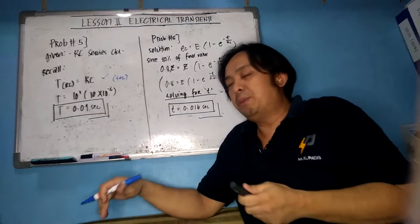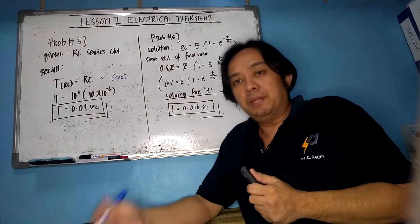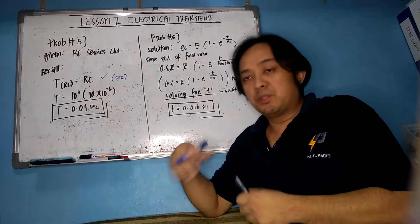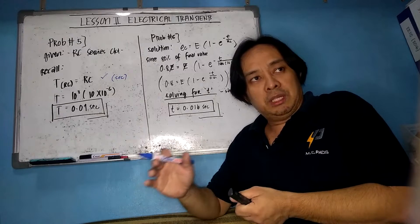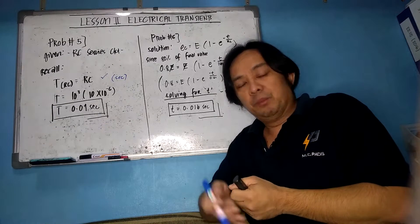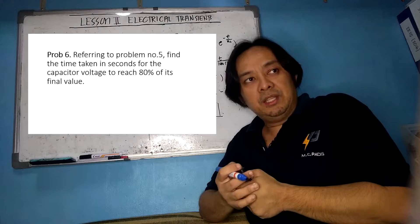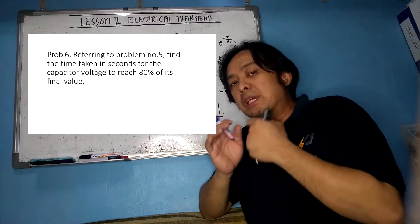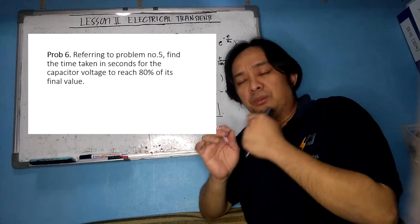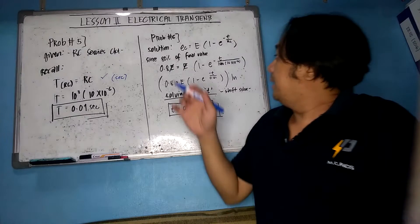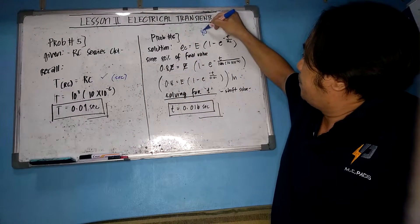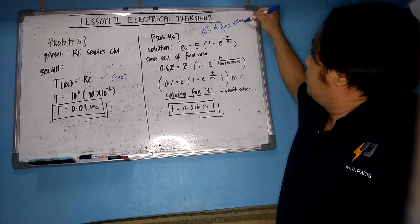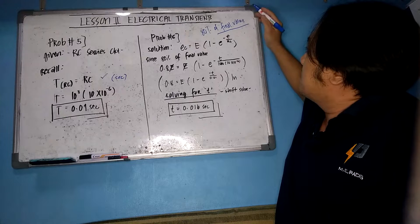The problem is very simple as long as you know the principle and the formula. Problems five and six are correlated. Problem number six, referring to the last problem: find the time taken in seconds for the capacitor voltage to reach 80% of its final value. When we say final value, it reaches steady state — the battery voltage.